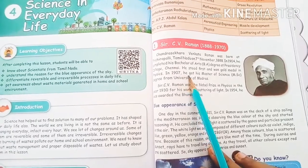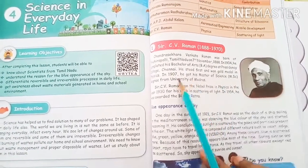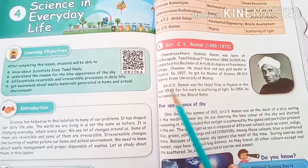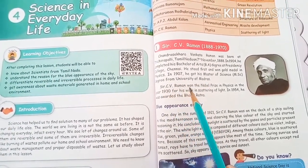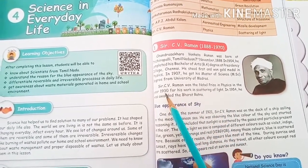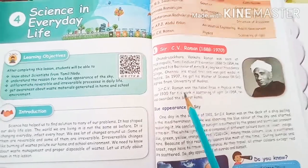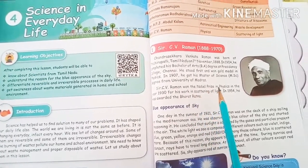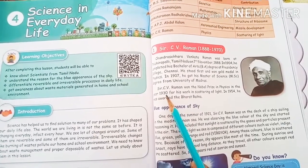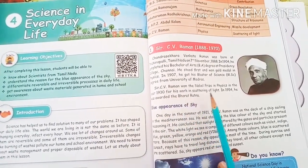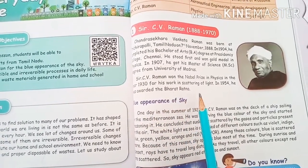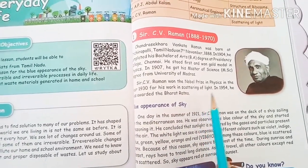In 1907, he completed his Master of Science degree from the University of Madras. Sir C.V. Raman won the Nobel Prize in Physics in the year 1930 for his work on Scattering of Light. In 1954, he was awarded the Bharat Ratna.